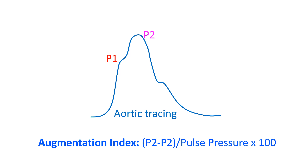The reflected wave responsible for aortic augmentation arises mostly in the lower extremities. Gradual stiffening of the arteries towards the periphery is also a cause for aorta-to-leg pulse amplification. Another important aspect of amplification is that it creates an inverse pressure gradient from the periphery to the central aorta.